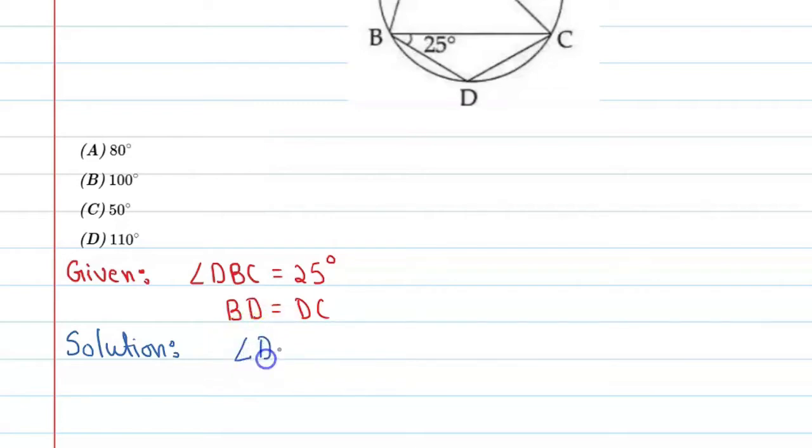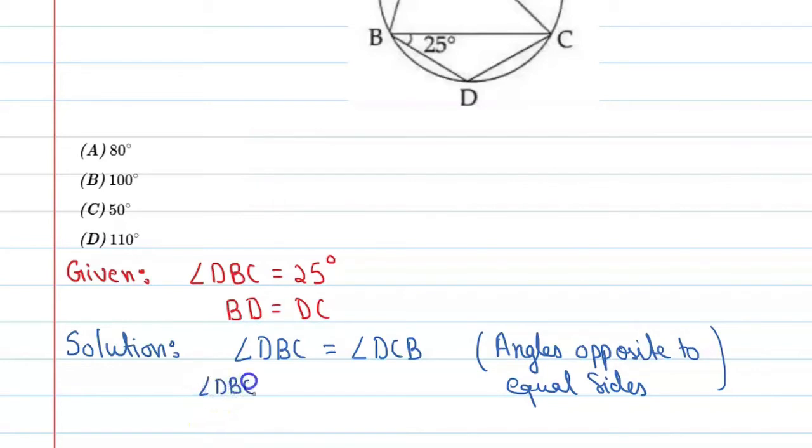Angle DBC is equal to angle DCB. Reason? Angles opposite to equal sides. So here you can say that both angles can be 25 degrees. So angle DBC is equal to angle DCB is equal to 25 degrees. Alright.